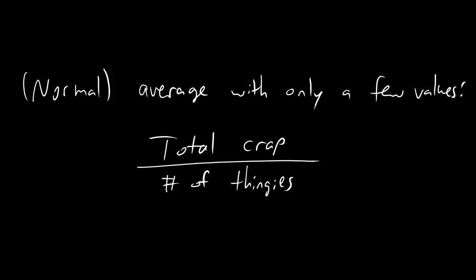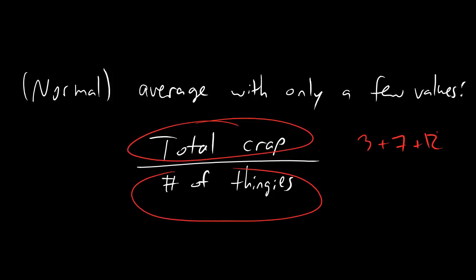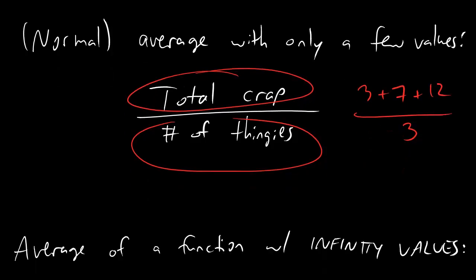So dudes, let's talk about average. You're used to seeing the notion of average, like, could you please find the average number of chainsaws juggled by a chainsaw-juggling clown if first he juggles 3, and then 7, and then 12 chainsaws? And when you take the average, you just add all your crap up, and you divide by how many different things that you have. So if you're trying to do the average of 3, 7, and 12, it would be 3 plus 7 plus 12, and you got three thingies there, divide by 3. No biggie.